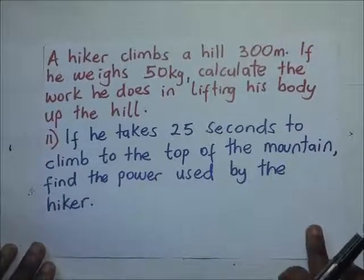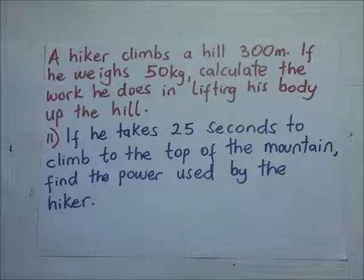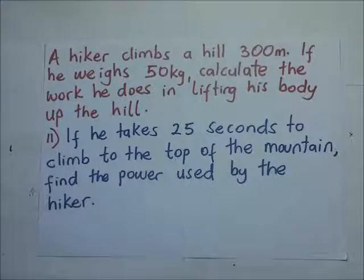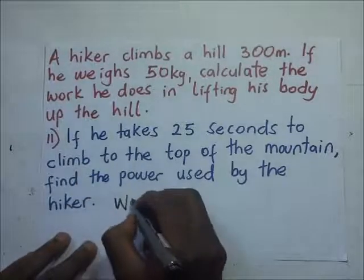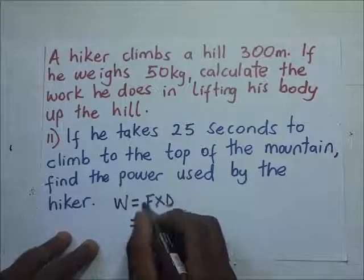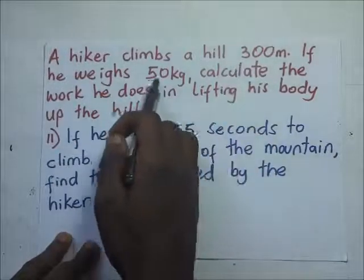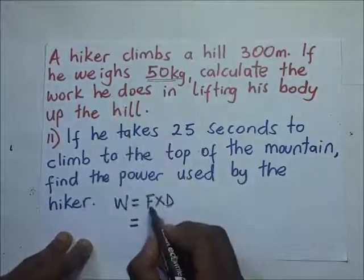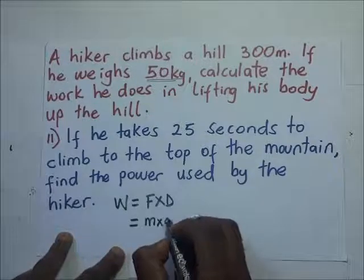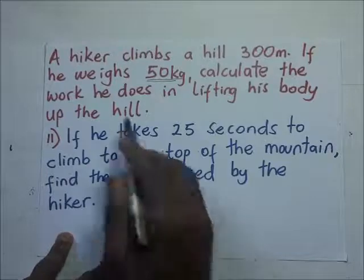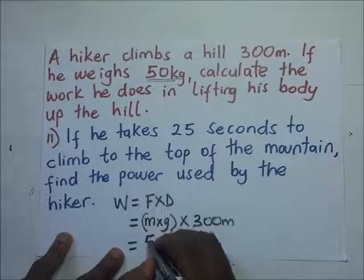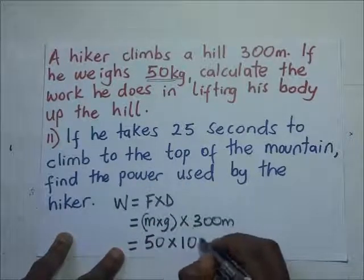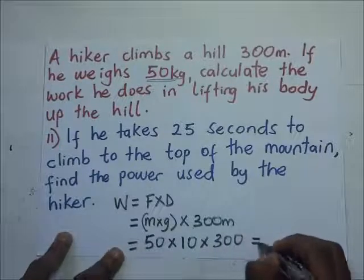A hiker climbs a hill 300 meters. He weighs 50 kilograms. Calculate the work he does in lifting his body up the hill. Work done equals force times distance. The force has not been given, but since the hiker weighs 50 kilograms, force equals mass times gravity — so 50 times 10 times 300.